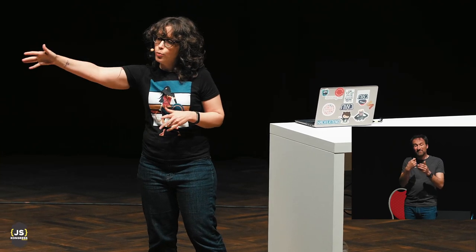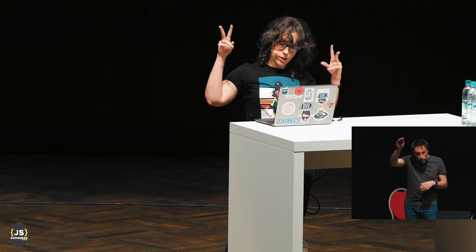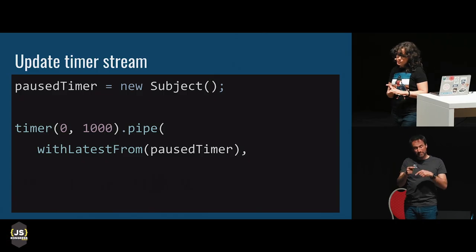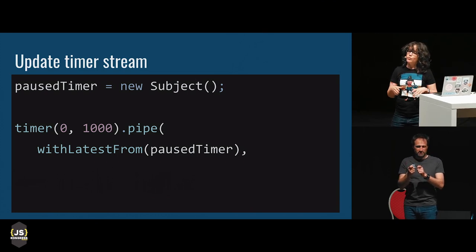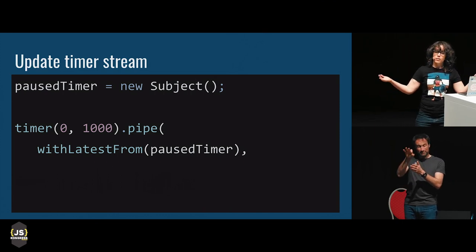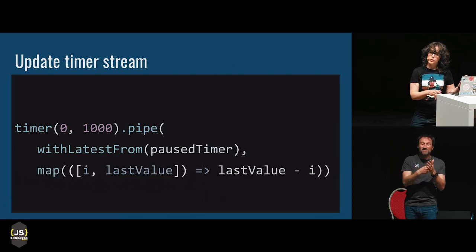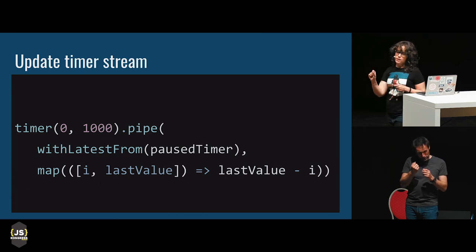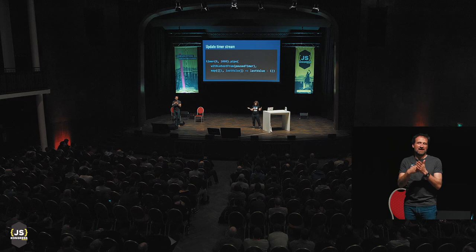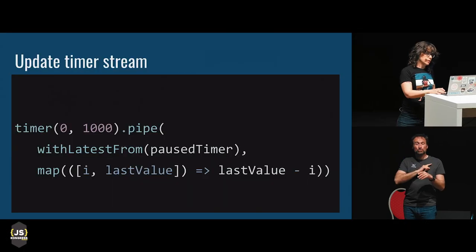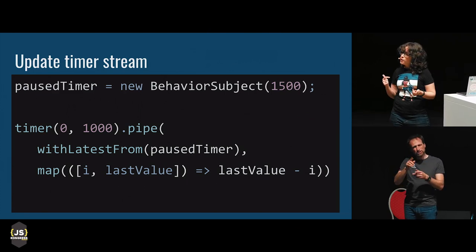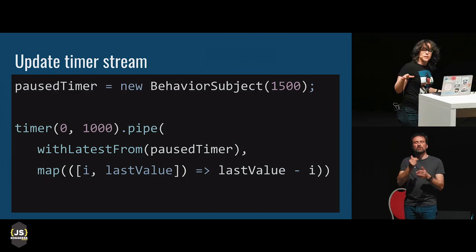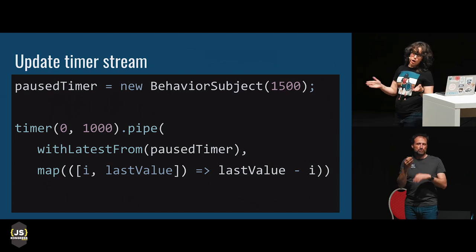When working with these state loops, you want to set up a subject early so that it's available to all subsequent streams. This subject is going to be subscribing to a stream that emits the last value from the countdown stream whenever pause is clicked. I can then retrieve that value in the future using the withLatestFrom operator, which returns the last value emitted on my subject — emitting both the value from the subject and the value from the timer, so I can calculate how much time is left. To make sure my subject always has a value, I initialize it using BehaviorSubject with a value of 1500. And this is my pause functionality — it allows me to pause and start repeatedly, ensuring that whenever I start again, I'm at the last place I left off.